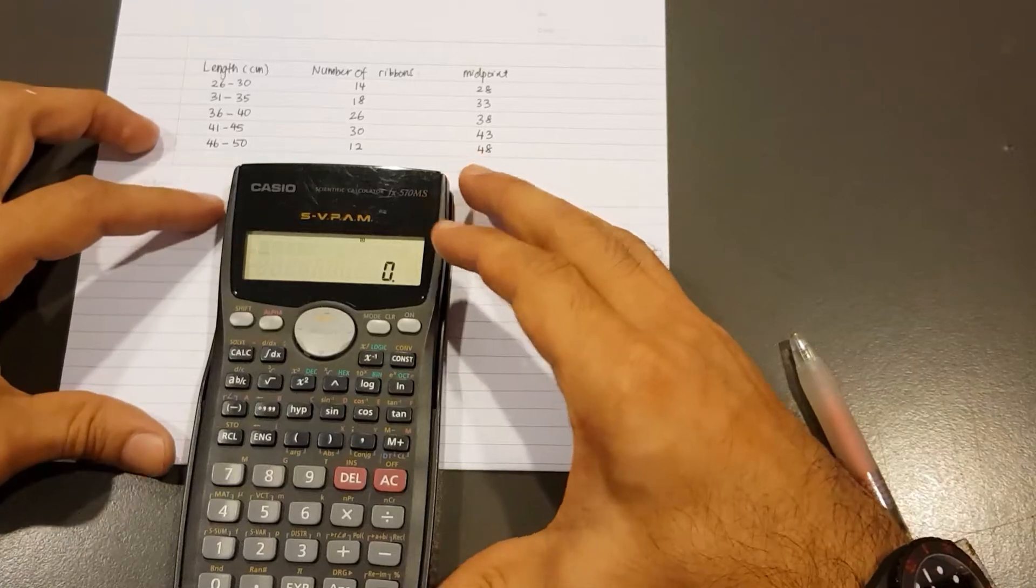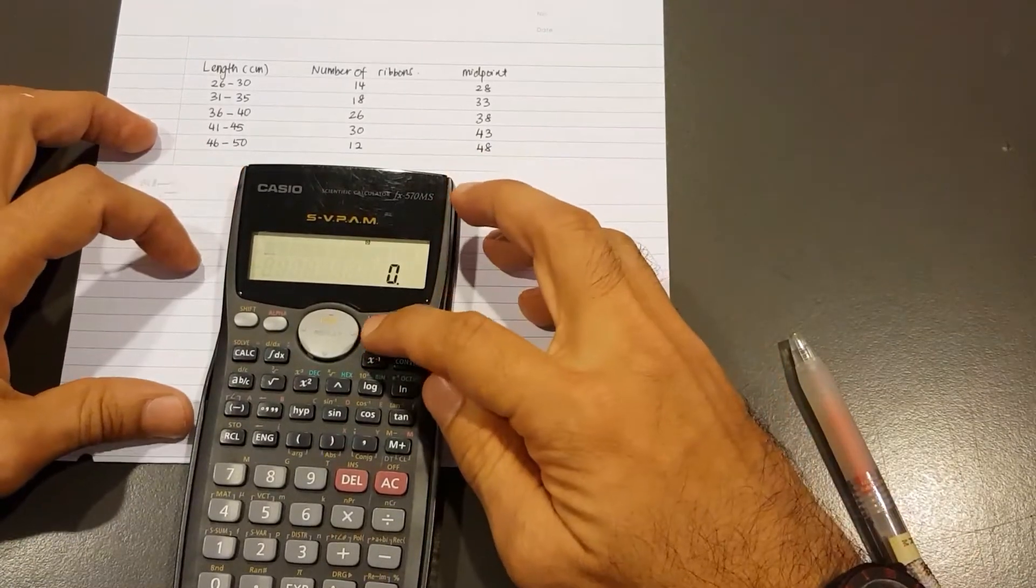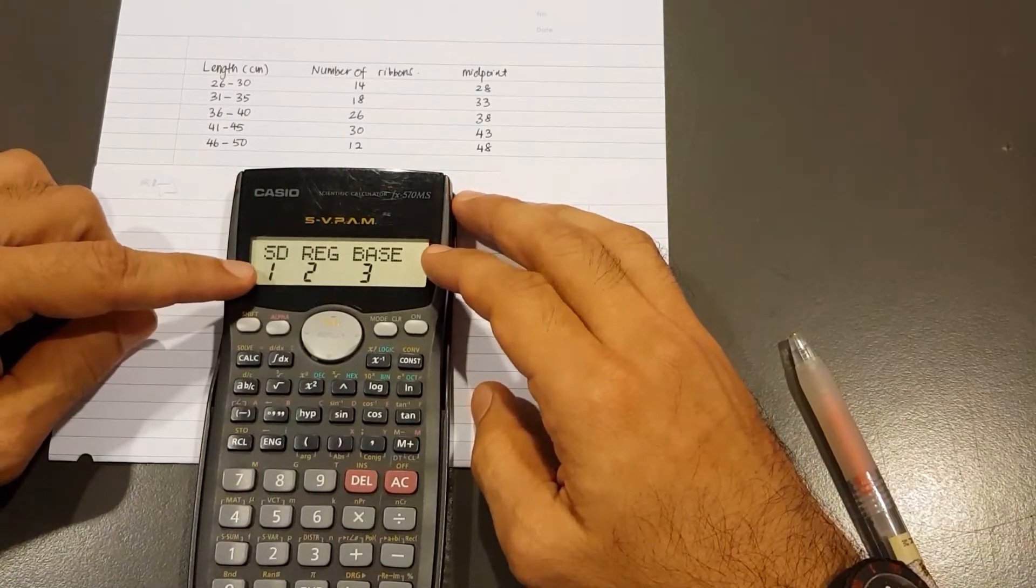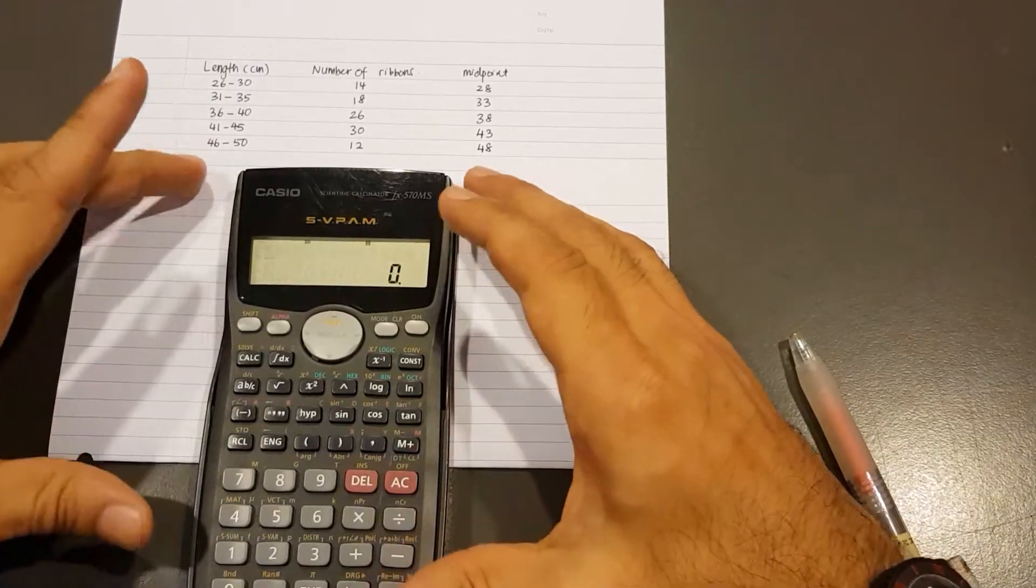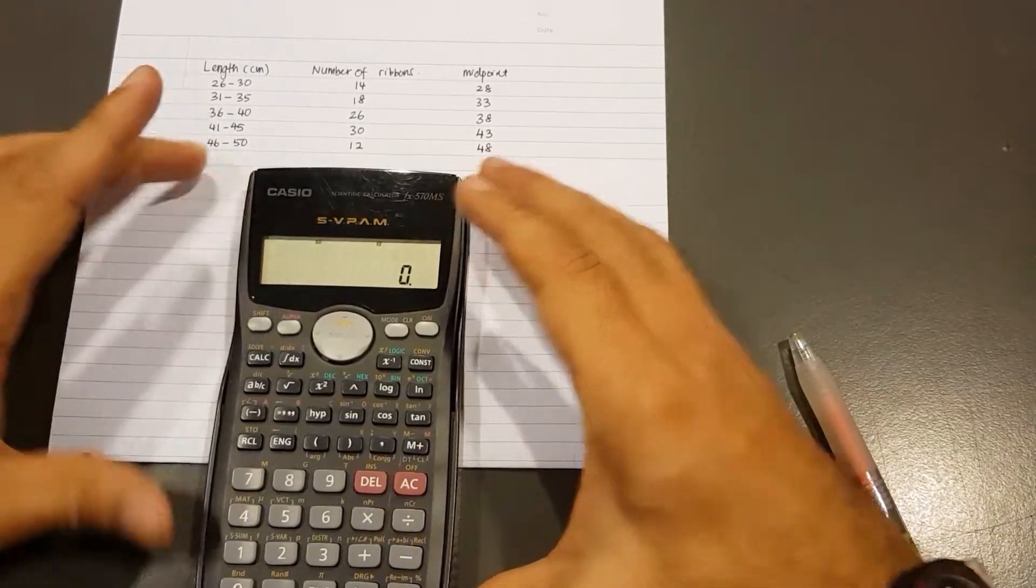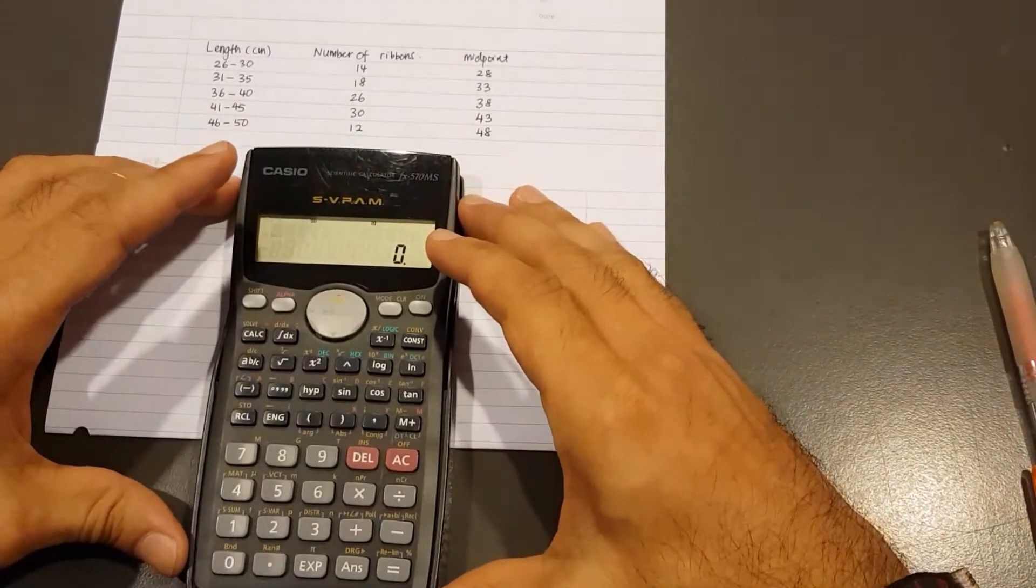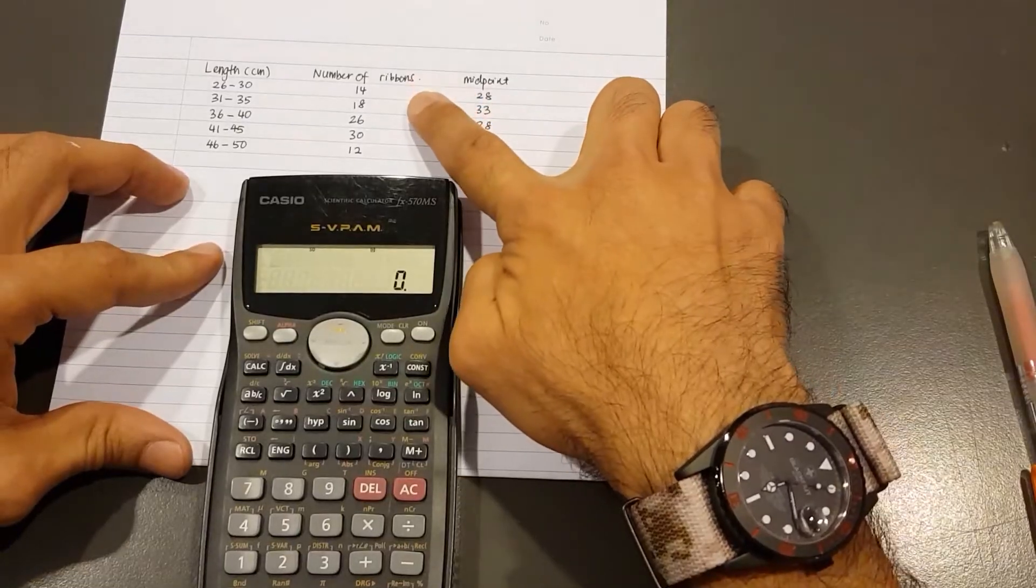Now for the basic calculator, we will need to tap the mode button twice. That's 1, 2, and you will see SD with the number 1 below that. So I go ahead and press 1. This means that the calculator is ready to accept the data. The way we do it is like this. First we have to key in the midpoint first, followed by the frequency.